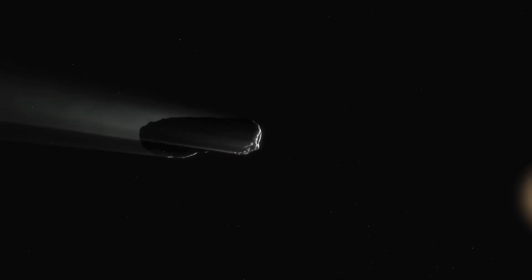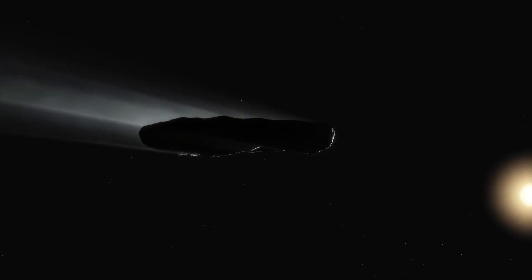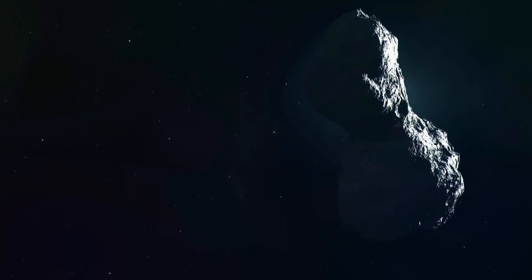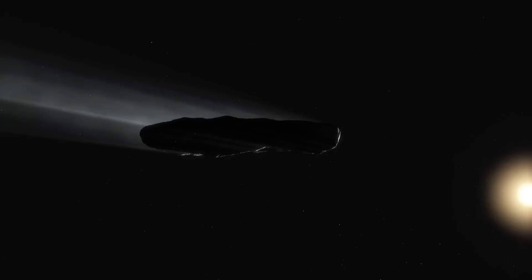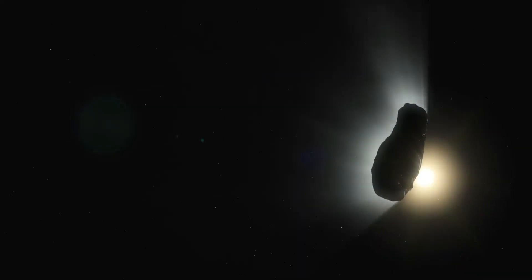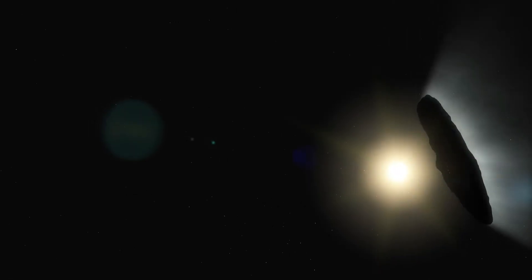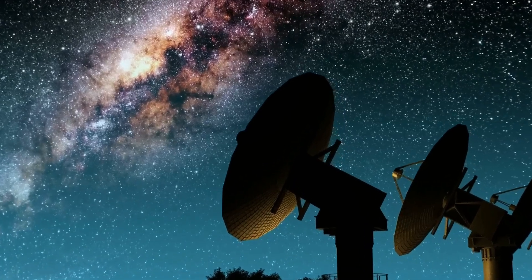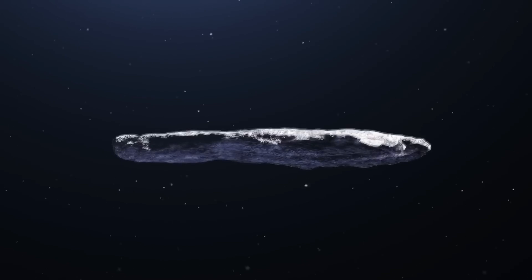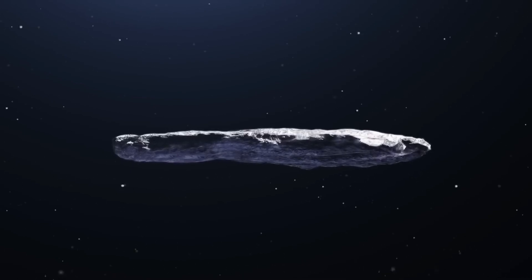This object originated from deep space, specifically interstellar space, the area between stars beyond our solar system. While occasional entries into Earth's solar system from interstellar space occur, Oumuamua was an unforeseen visitor from interstellar space, leaving us puzzled. Now let's delve into its appearance.